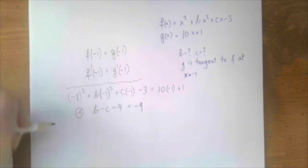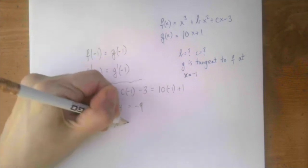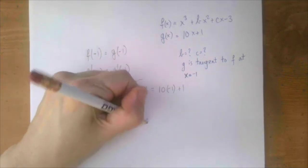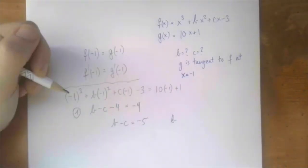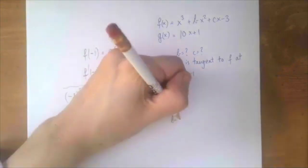That's a nice linear equation. We can simplify: b - c = -5, or b = c - 5.